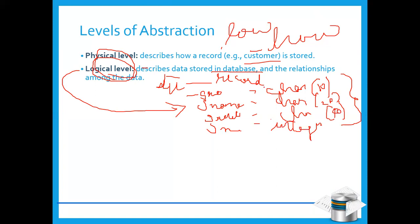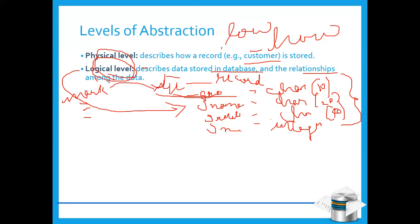The logical level also covers the relationships among data. For instance, you may have a student record and a mark record. The mark record has details like subject one, subject two, subject three, total, average, and grade. This student record and mark record can be related to one another. So logical level of abstraction describes how data is stored in the database and the relationships among the data.